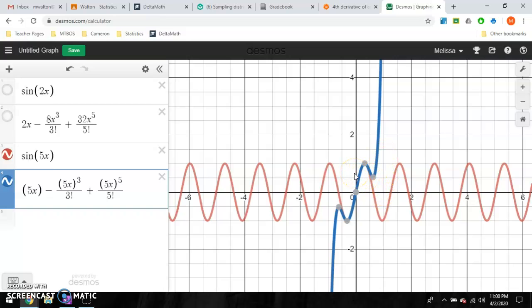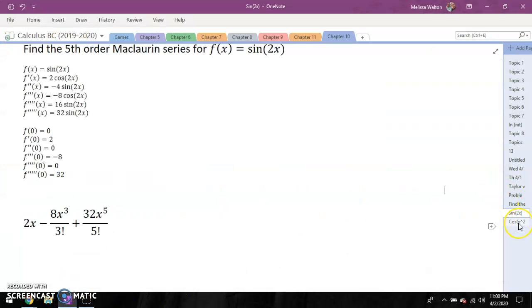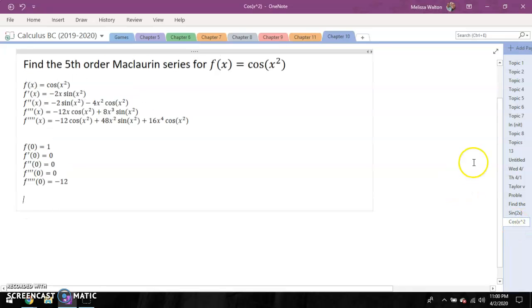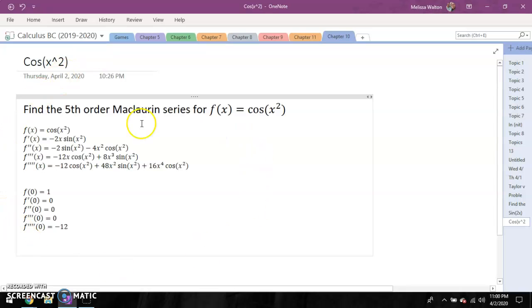All right, I'm going to go back to the monstrosity that you just looked at. Holy cow. If any of you guys actually took the time to do this, bravo. I am impressed. So this got ugly in a hurry. And I actually simplified a lot of these. But with this repeatedly, we didn't have a derivative that was non-zero until our fourth derivative. Our fourth derivative ended up being negative 12.